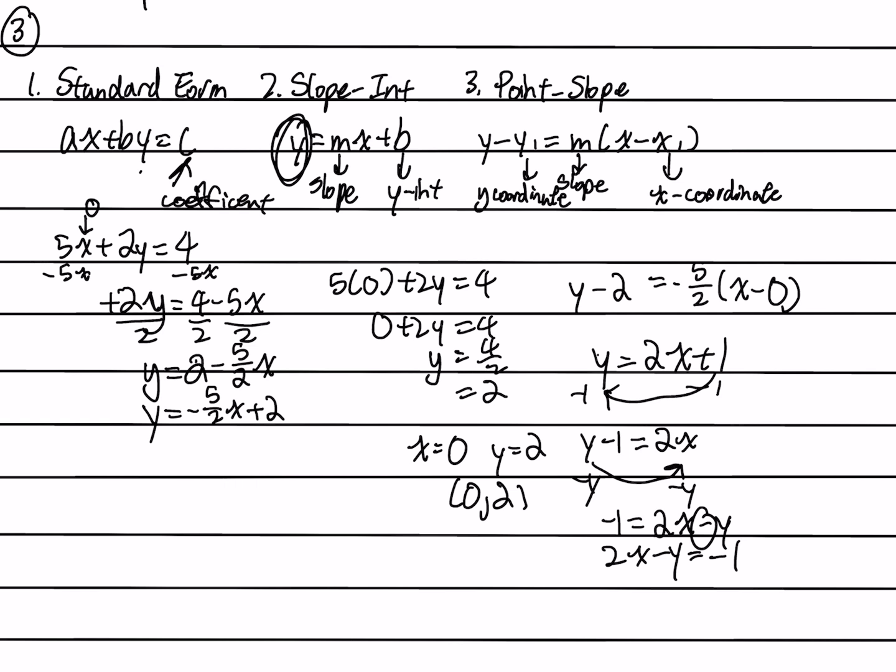And point-slope form is very useful because you can find out a possible point. And you can also get the slope from both the point-slope form as well as slope-intercept form. And you can get the y-intercept from slope-intercept form. So these last two equations are some of the most important ones, with slope-intercept being the most used one.